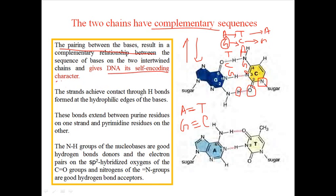This complementary structure actually helps DNA give its unique self-coding characteristic. That means if one strand is found, the other strand can be formed using the information in the first strand. Because if you have A-G-T-C-G in one strand, the other strand will definitely be T-C-A-G-C. The cell itself knows the complementary nature, governed by Chargaff's rule.